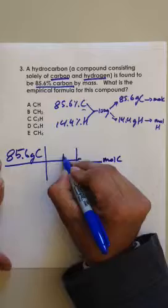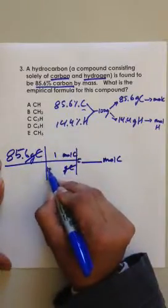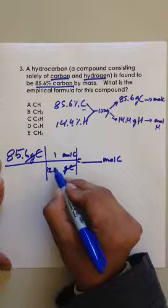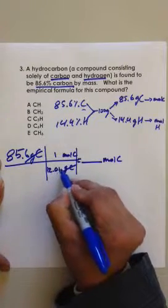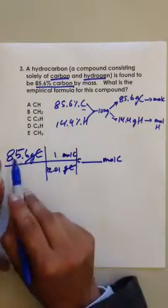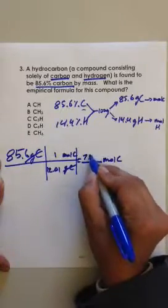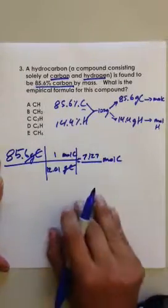Grams of carbon over moles of carbon. Those are going to cancel. What's the grams in one mole of carbon? You set it 12.01 or 12.011, depending on who you ask. So this times this, divided by that, is going to give you the moles of carbon, which is 7.127 moles of carbon.